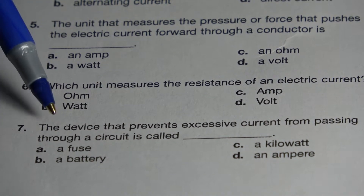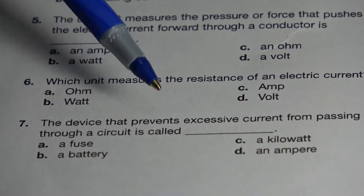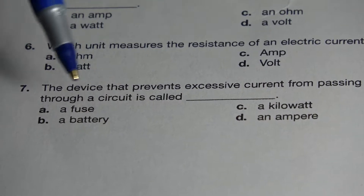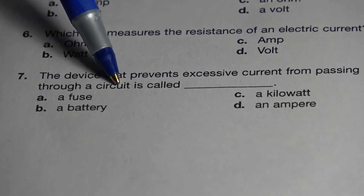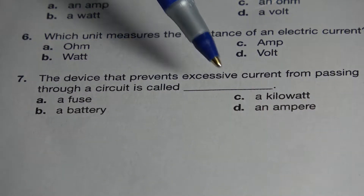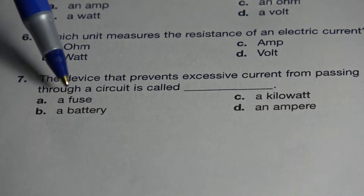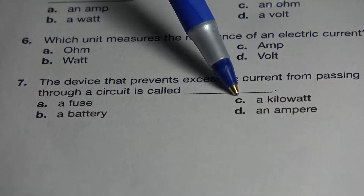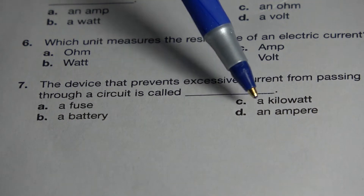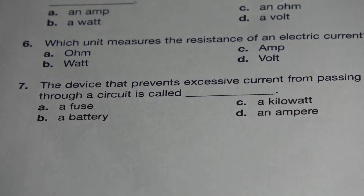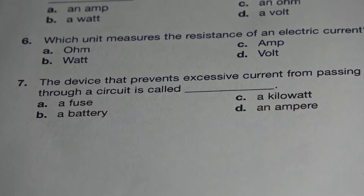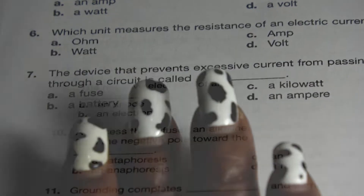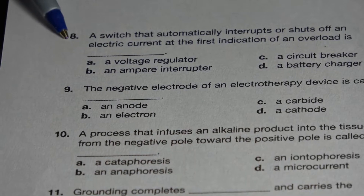Number 7. The device that prevents excessive current from passing through a circuit is called blank. A: a fuse, B: a battery, C: a kilowatt, or D: an amp. The correct answer is A: a fuse.